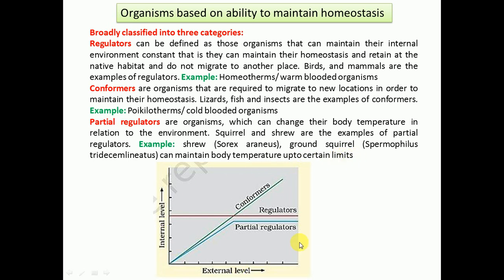This diagrammatic representation shows different organisms in response to environmental conditions. On the y-axis is the internal environmental condition, and on the x-axis is the external environmental condition. For regulators, there is no change in the internal level with changes in external conditions — the line is parallel to the x-axis. For conformers, there is a constant change in the internal level with every change in external conditions. For partial regulators, they can maintain their internal conditions up to certain limits, but beyond that they cannot maintain their internal body conditions.